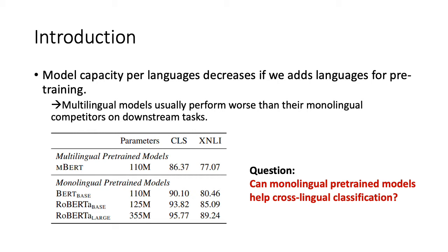However, for models with a fixed number of parameters, the model capacity per language decreases if we add more languages. It can be found that multilingual models usually perform worse than monolingual models on downstream tasks. Look at this table — we compare the multilingual models and monolingual models on two classification tasks in English, and the monolingual models outperform the multilingual models. So we raise a question: can monolingual pre-trained models help cross-lingual classification?